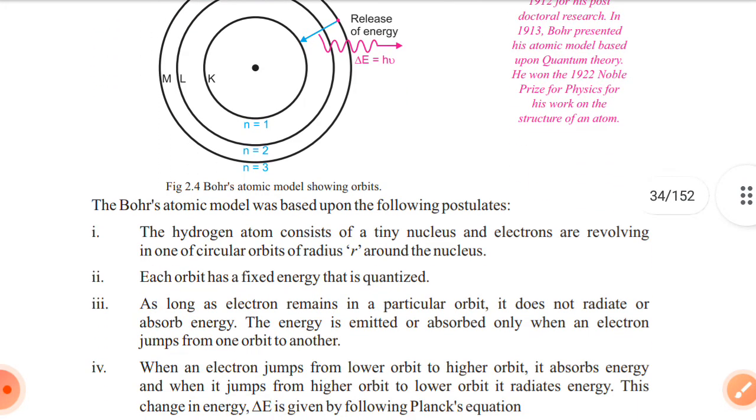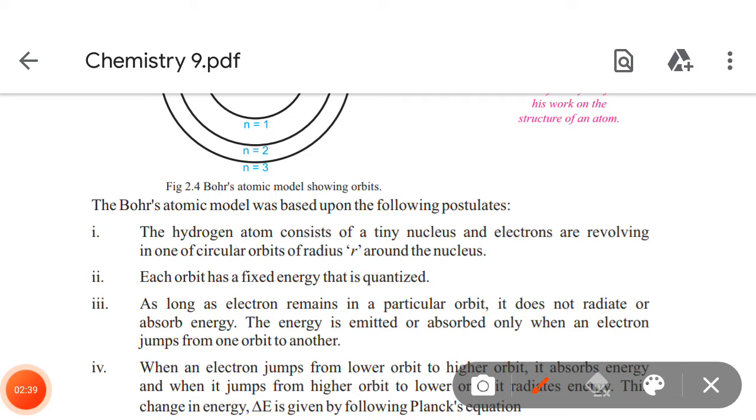The Bohr's atomic model was based upon the following postulates. The hydrogen atom consists of a tiny nucleus and electrons are revolving in one of circular orbits of radius R around the nucleus.